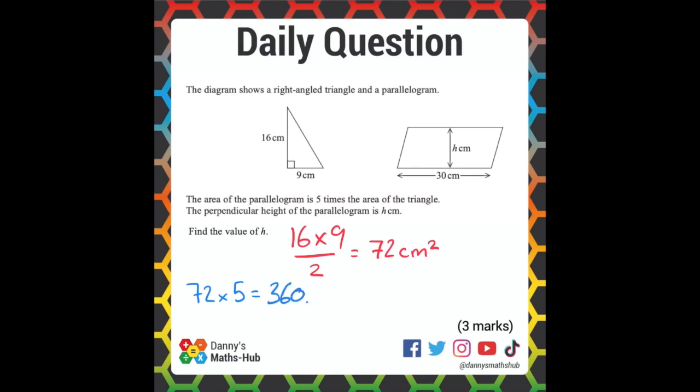So now we know that the area of the parallelogram is base times height. Well, we know what the base is, it's 30, and we just need to know the height, and we know the area. So we can reverse this. We can do the inverse. So we can do 360 divided by 30, and that will tell us our h, which gives us an answer of 12. So h equals 12.